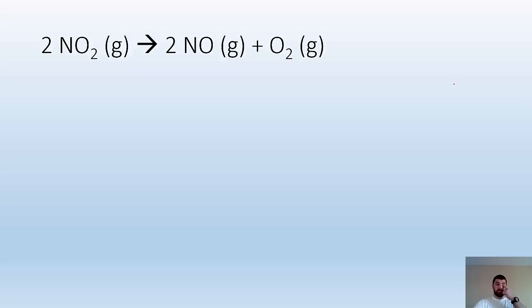Another one, 2 NO2 (g), giving me 2 NO (g) and O2 (g). All right. So here, we got two gases, giving me 2 and 1 gas here. So I go from 2 moles of gas to 3 moles of gas, which means that I'm going to have a positive change in entropy. Entropy is going to increase, because I end up with more gases than I started with.